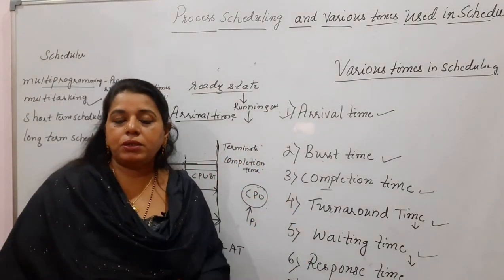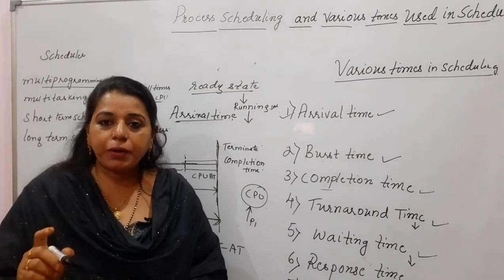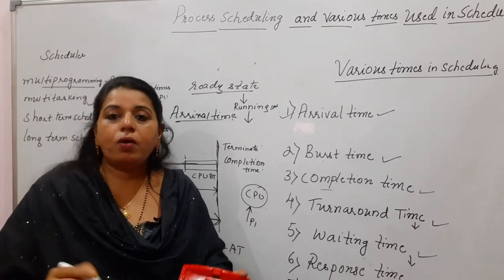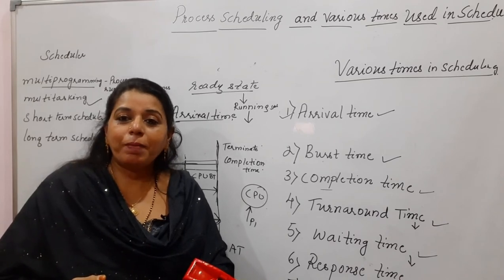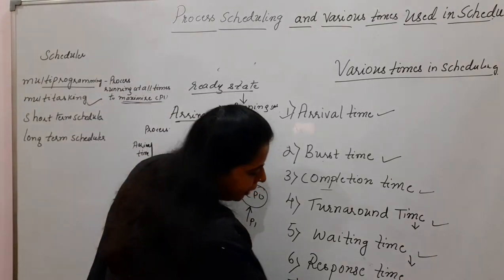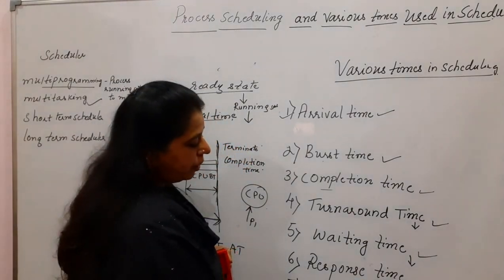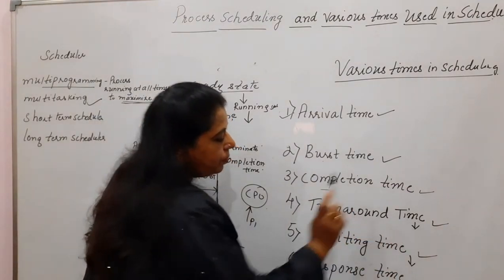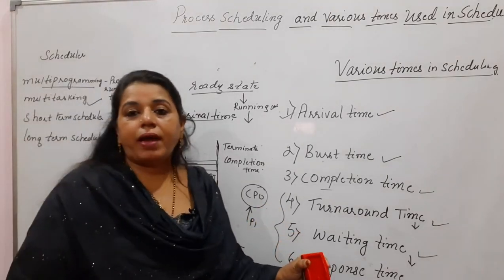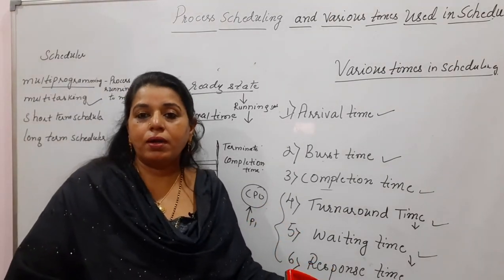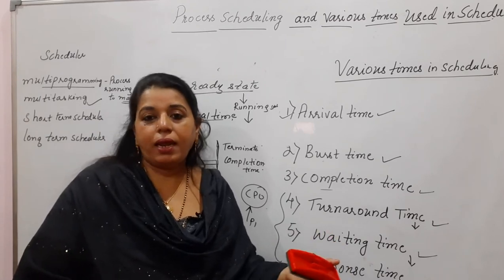Throughput is the number of processes getting executed per unit time — for example, how many processes get executed in one hour. We want throughput to be maximum, but we want minimum response time, minimum waiting time, and minimum turnaround time. If these values are minimum, we say that particular scheduling algorithm is efficient.